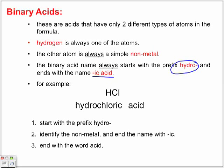Notice that hydro, as we said, represents the hydrogen. We're looking at chlorine or chloride, but we're adding an IC ending because this is an acid.